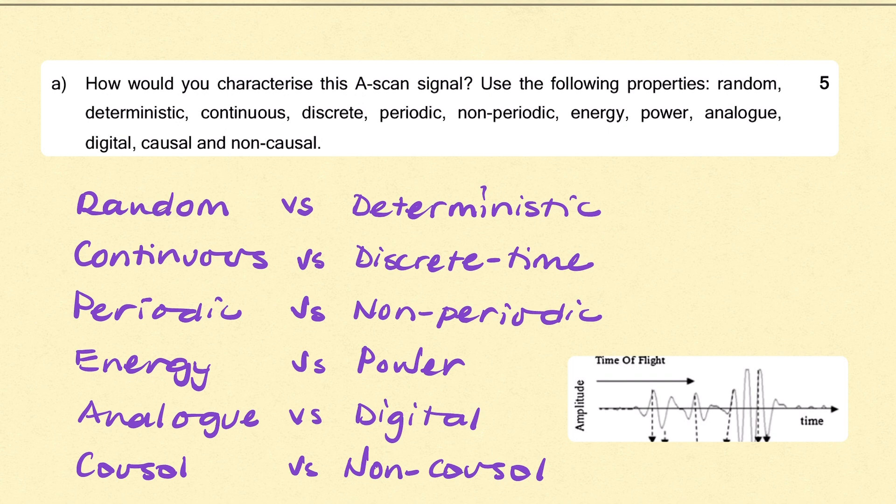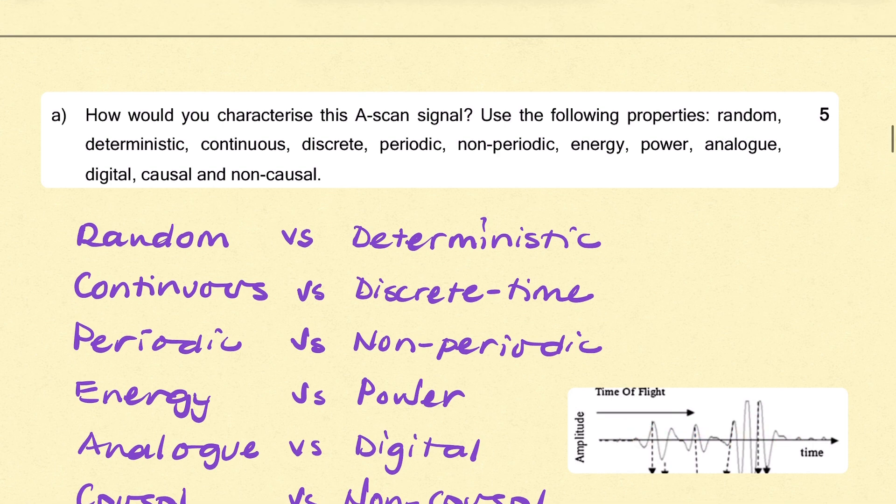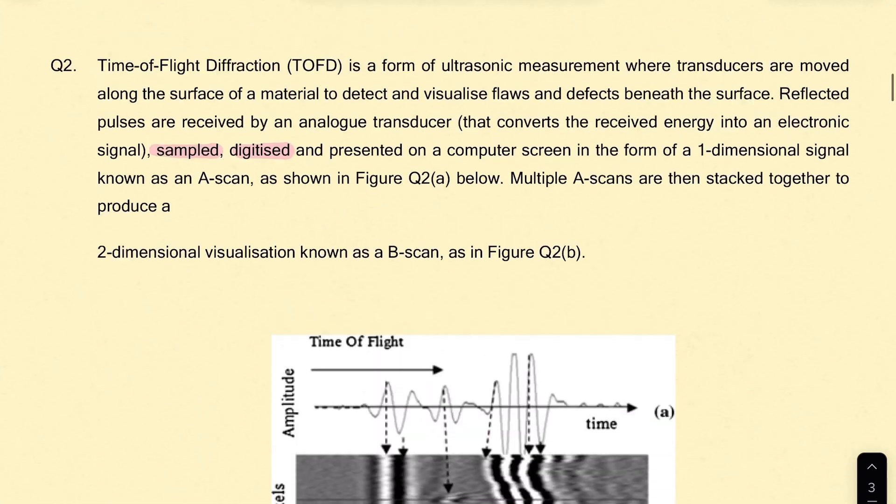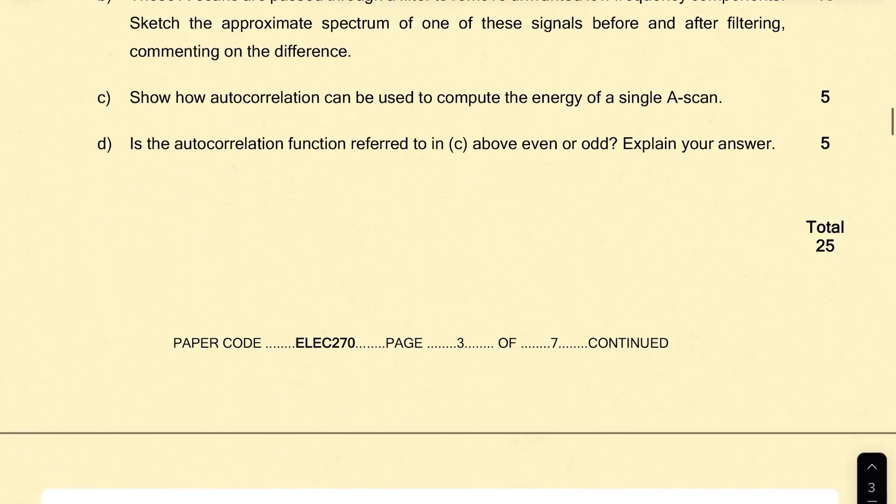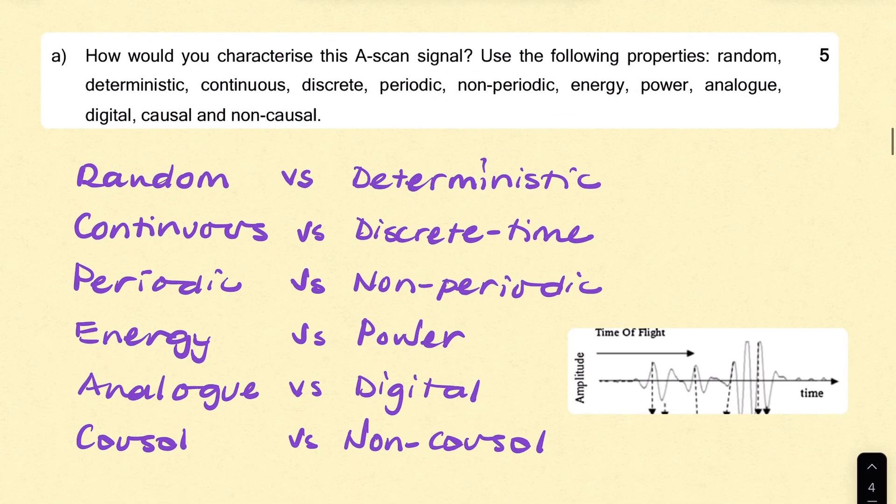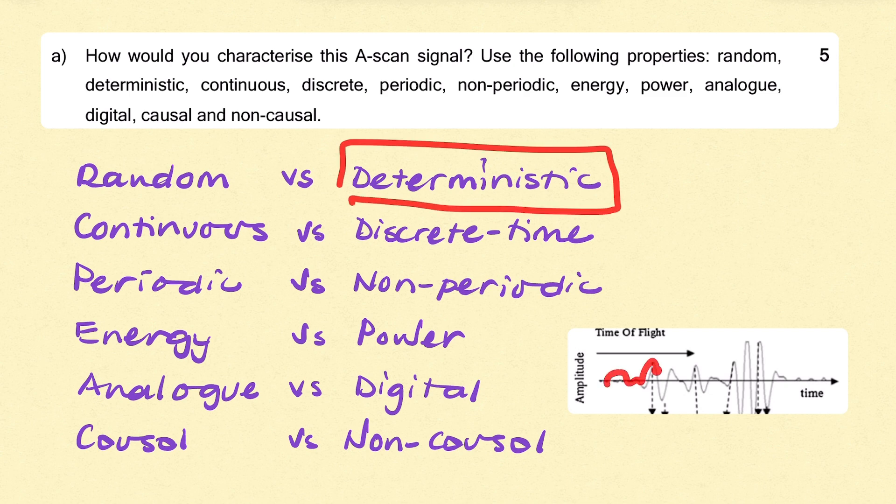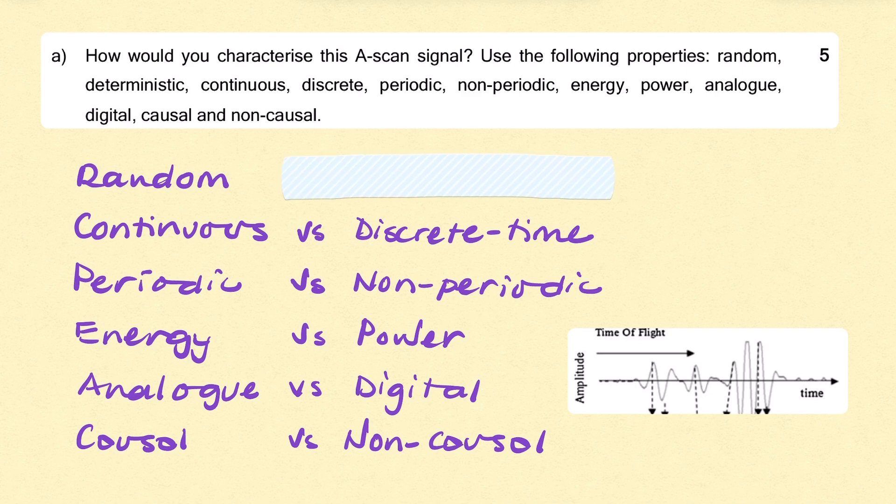First of all, because these signals are reflections from, in this case, it looks like flaws within the surface of some material, then they are not deterministic. There is no mathematical formula that we can use to characterize this signal deterministically. So it's not deterministic, it's a random signal. That's our first word: random.